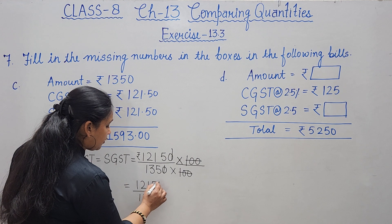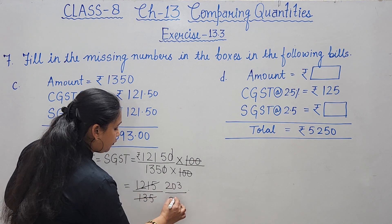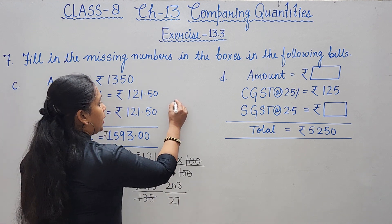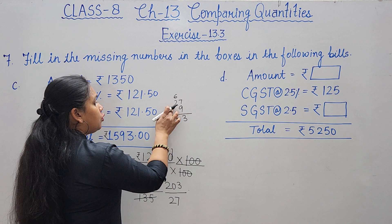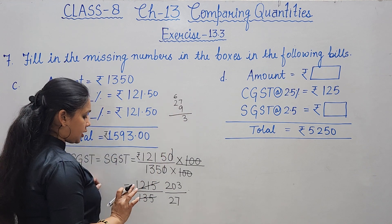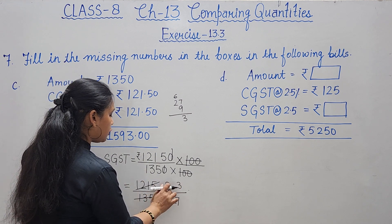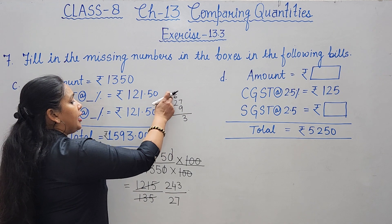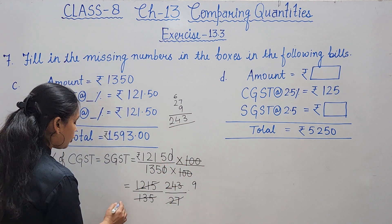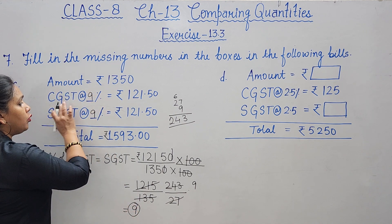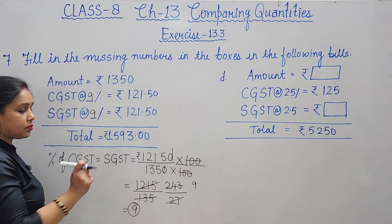Dividing 1215 by 135: first divide both by 5 to get 243/27, then divide by 9: 243/27 = 9. So the percentage is 9%. This means CGST = 9% and SGST = 9%, total GST = 18%. The calculation confirms 9% of 1350 = 121.50 rupees.